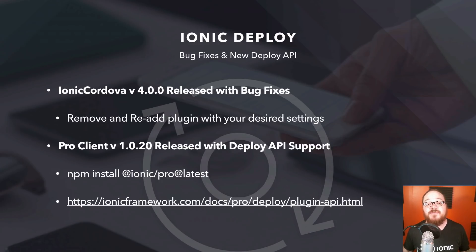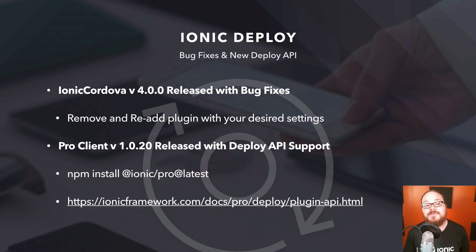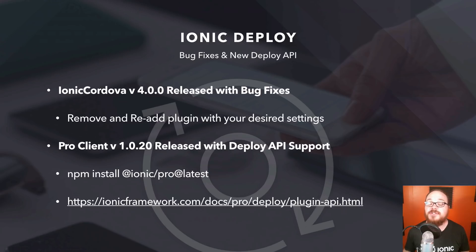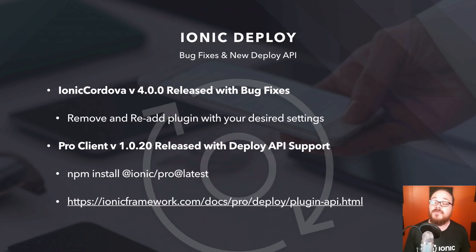One of the biggest changes we've been working on is improvements to Ionic Deploy. Not only have there been a lot of bug fixes, but there's also a brand new Deploy API. Ionic Cordova has been updated to 4.0.0, which has a lot of bug fixes — to update that, you'll need to remove and re-add the plugin with your desired settings. The Pro Client, normally used to access our monitoring service, has been upgraded to 1.0.20, and that release includes support for the entirety of the Deploy API. This means you'll no longer have to use the Cordova API directly. You can use our new TypeScript wrappers with full definitions, all enabled straight from the Pro Client. To upgrade your version of the Pro Client, just do an NPM install, and check out our documentation for more information on this new API.